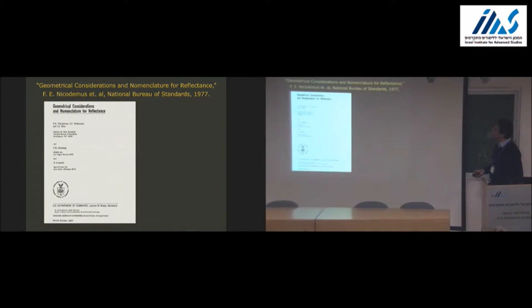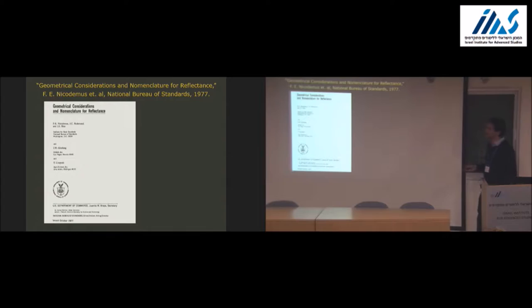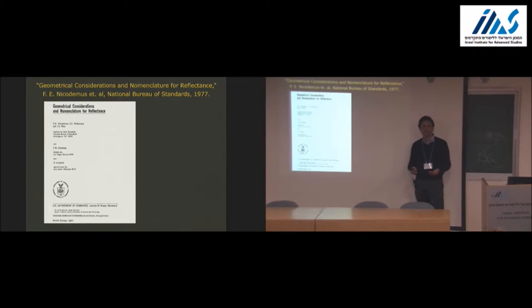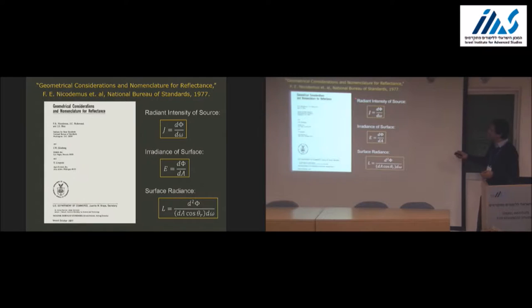So talking about light, one of the classic papers, which happens not to be a vision paper but a very important paper, was this one by Nicodemus back in 77. When we started thinking about light in vision, we had to think about how to define various things - the brightness of a light source, the illumination of a surface, the reflectance of a surface. This paper came up with the working definitions we needed: radiant intensity of a source, the irradiance or illumination of a surface, and surface radiance. By the way, the shorter your title is to your paper, the more impressive it is.